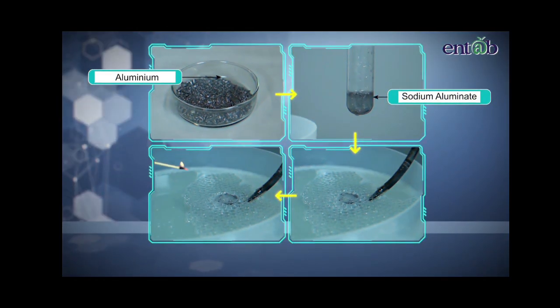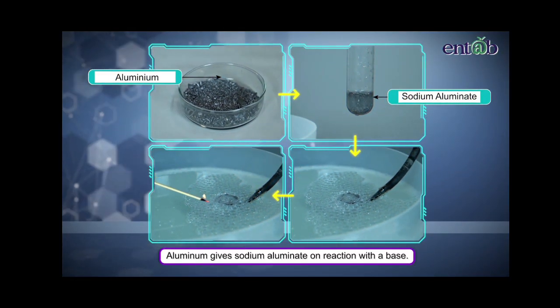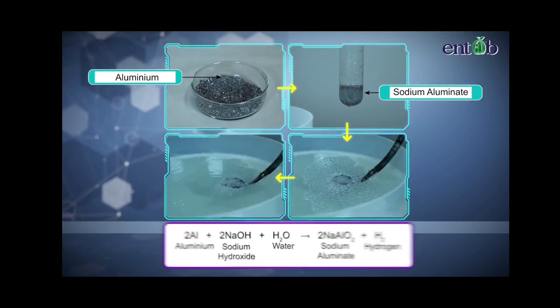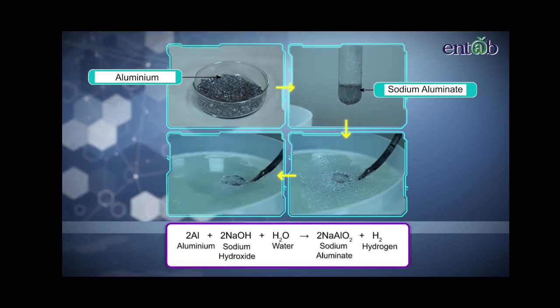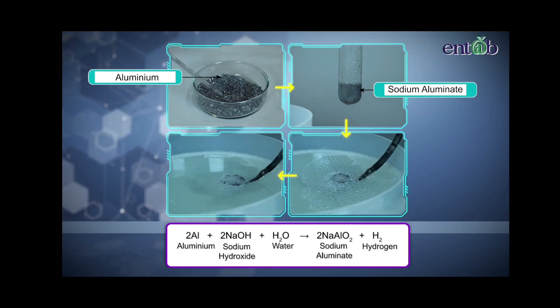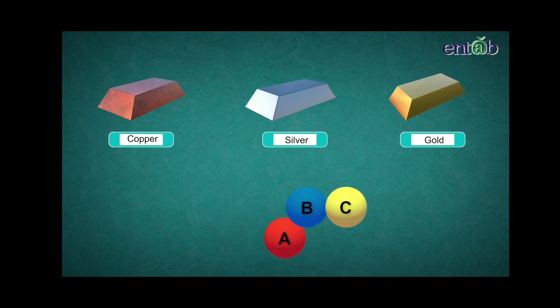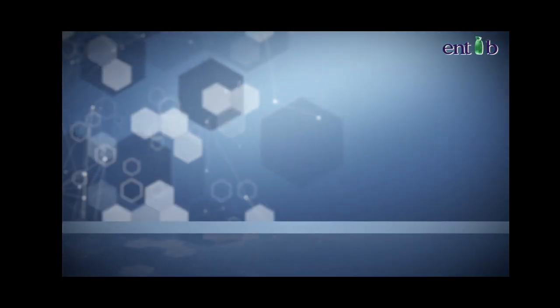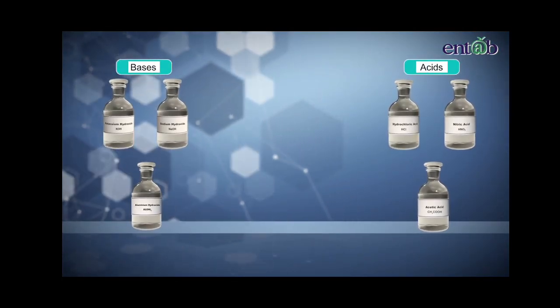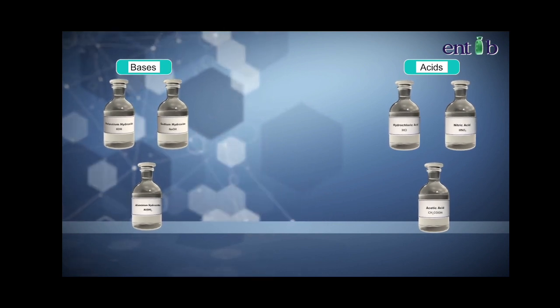Similarly, aluminum gives sodium aluminate on reaction with base. The balanced chemical equation can be shown. But remember, this is not the case for all other metals. Most of the other metals do not react with the base. We will further explore more chemical properties of acids and bases in our upcoming modules.